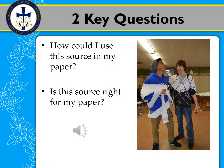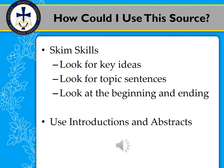Whenever you find a source, you should ask yourself two questions. First, how could I use this source in my paper? And second, is the source right for my paper? When you ask how you could use a source, you want to keep in mind what your assignment is supposed to be about and what you're supposed to be doing with it.